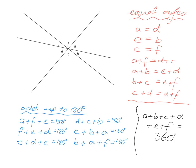Let's look at which angles are equal — we're looking for vertically opposite angles. Angle a is vertically opposite angle d, so they are equal. Angle b is vertically opposite angle e, so they are equal. And angle c is vertically opposite angle f, so they are also equal.